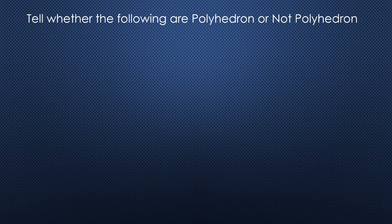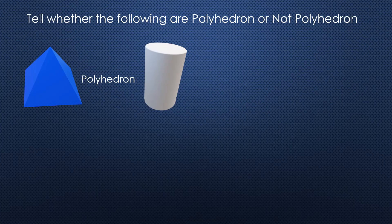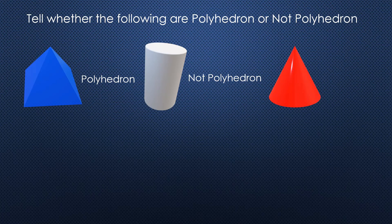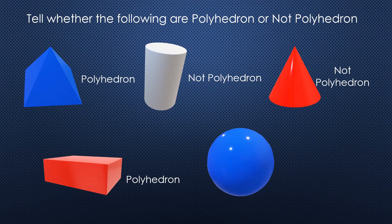Let's have this activity — tell whether the following are polyhedron or non-polyhedron. This figure is a polyhedron. The next object is not a polyhedron. The next object is also not a polyhedron.